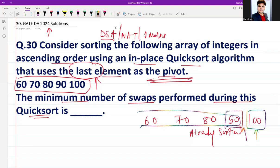Similarly for 80, 70, and 60, because they by default are at their correct position. So the pivot element is every time at its correct position, so no swapping will be required.